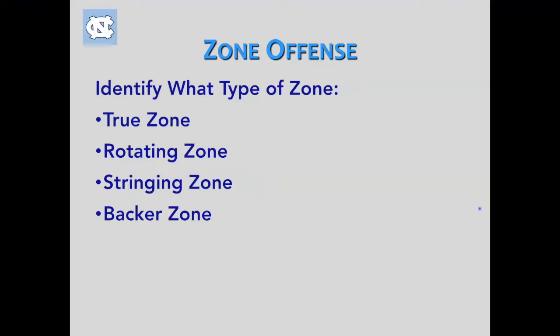In college, we see most of the time a rotating zone with guys in different spots. Teams put their short sticks depending on maybe who their weakest shooter is. You'll see schools put short sticks on the wings, both behind, or at crease and top center. So you'll be able to see from video clips that different schools put the short sticks in different spots.